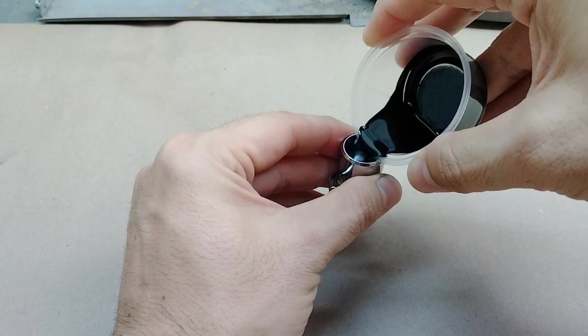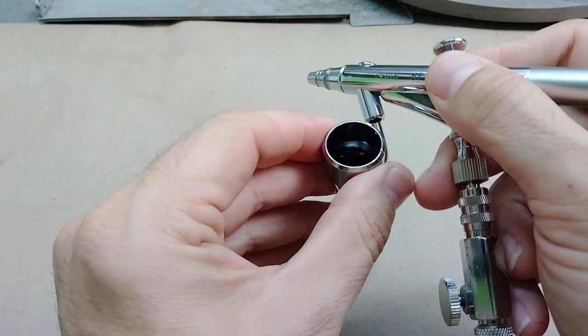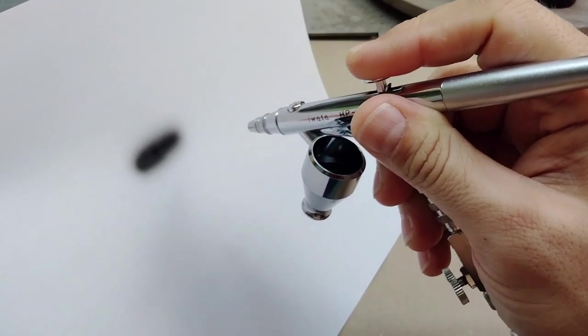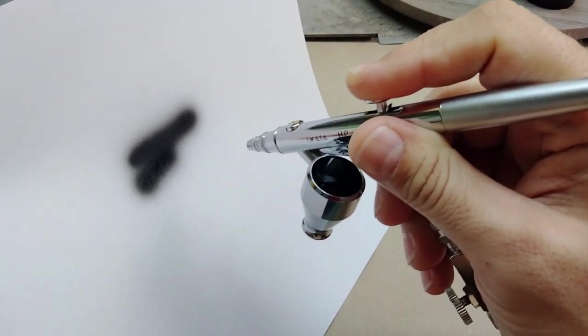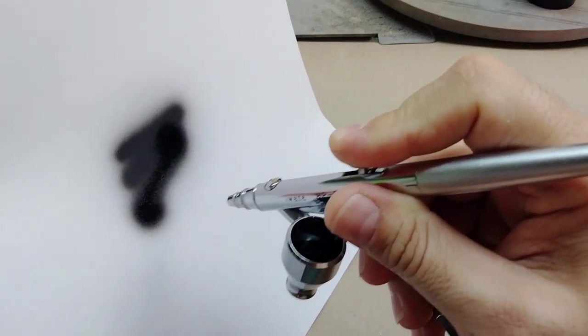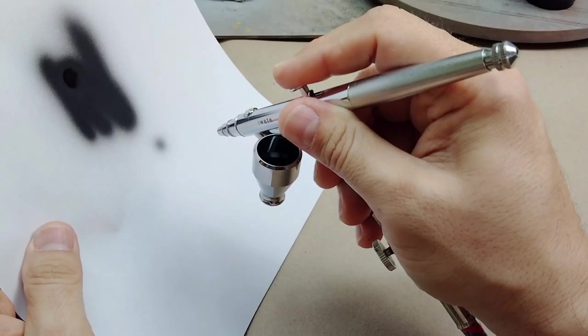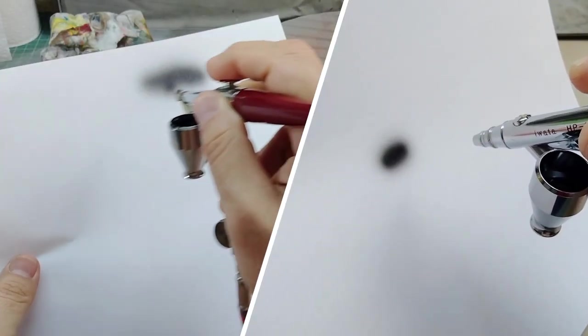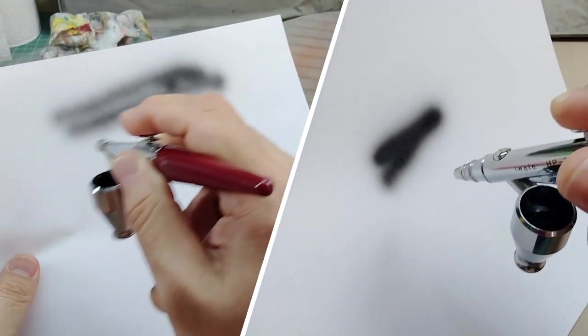Starting again with the first test at 20 psi, we put this airbrush through its paces. We start with the general passes. One of the first things we immediately notice is how much smoother and tighter the paint sprays onto the paper, especially when you compare it side by side to the first airbrush.